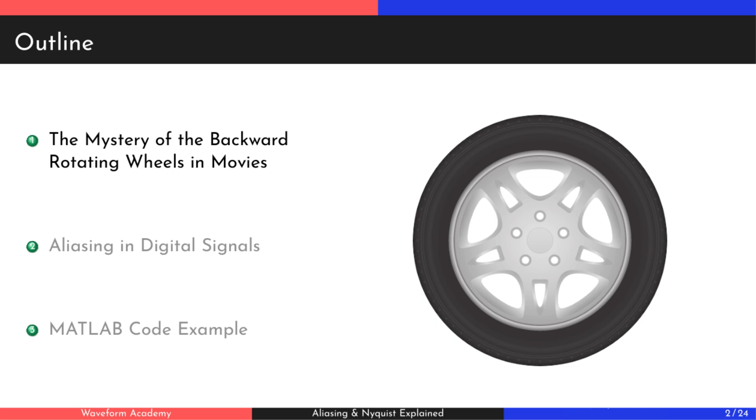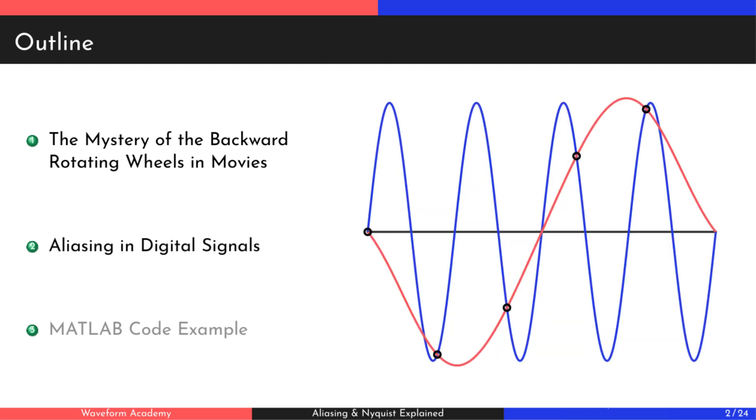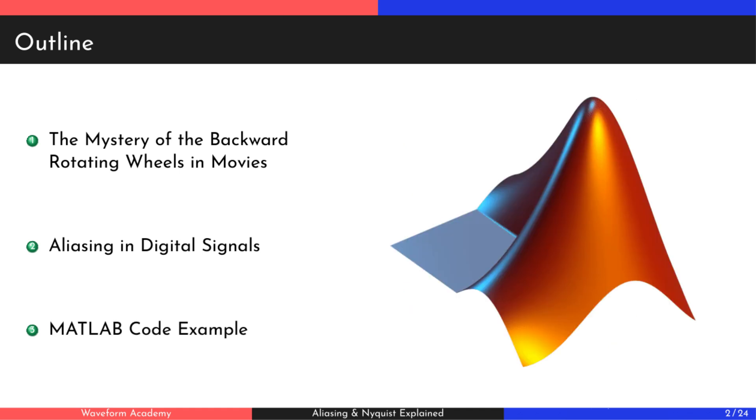Why do car wheels in movies sometimes appear to spin backward? Then, we'll explore how this phenomenon applies to digital signals and its impact on sampled data. Finally, we'll introduce a MATLAB simulation, allowing you to experiment with aliasing and the Nyquist theorem yourself.